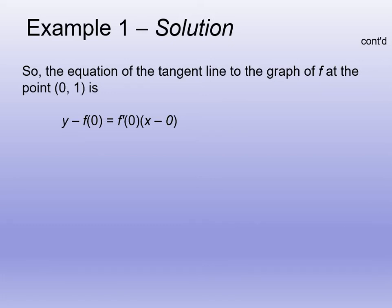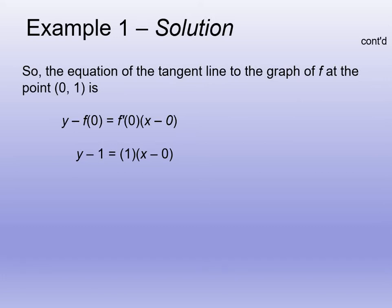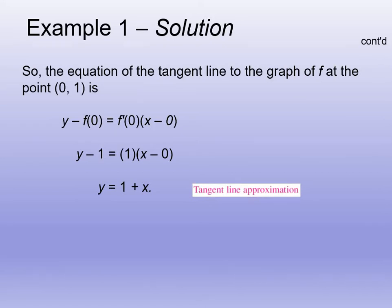Substituting into point-slope: y minus 1 equals 1 times (x minus 0). Simplifying, we get y = 1 + x. That's our tangent line approximation of 1 + sin(x) at the point (0, 1). We can substitute values on either side of zero into both the approximation and the original function; as we get closer and closer to zero, both approach one — that's why it's called the tangent line approximation.